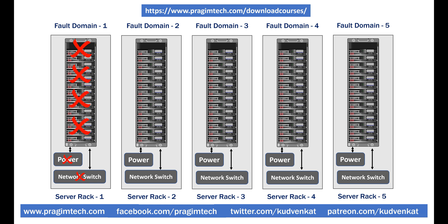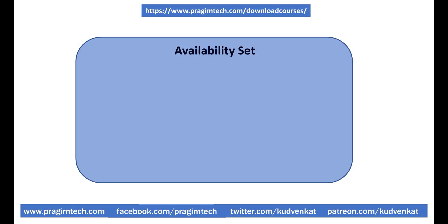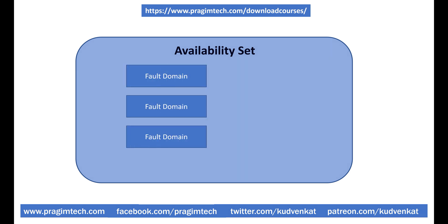We don't want all the servers to be rebooted at the same time. Only one update domain is rebooted at a time. A rebooted update domain is then given another 30 minutes to recover before maintenance is initiated on a different update domain. In short, an update domain is a group of servers that can be updated and rebooted at the same time. An availability set is a concept within a data center and it is made up of multiple fault domains and update domains.